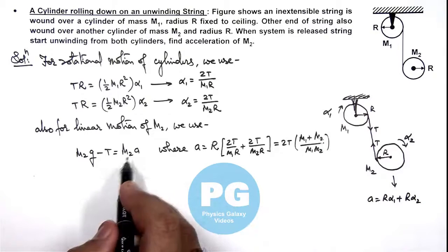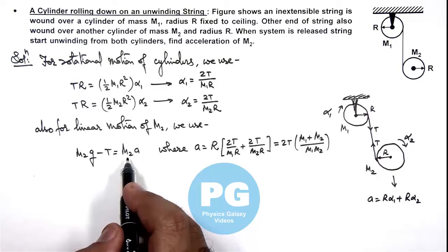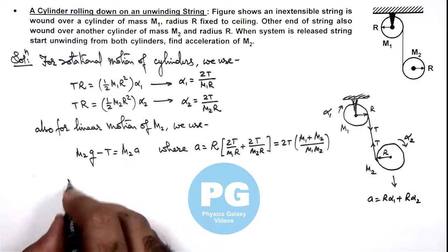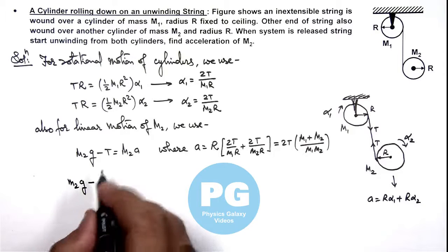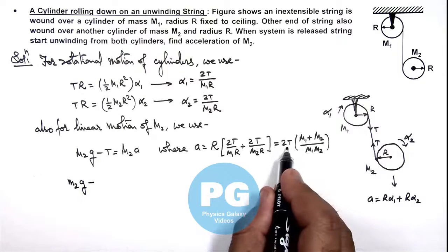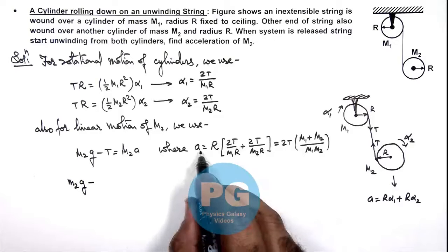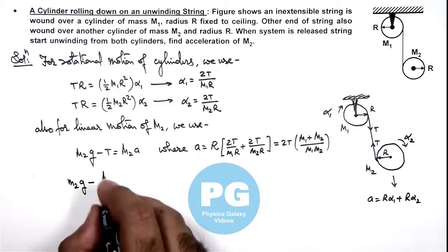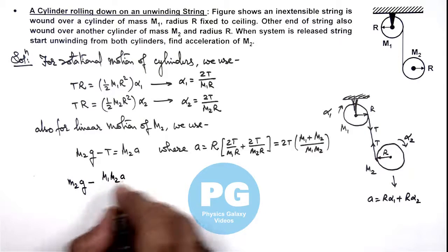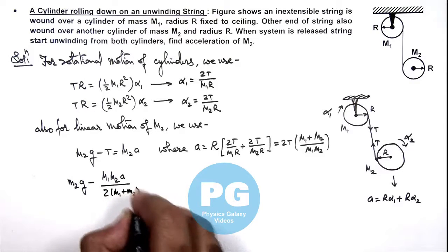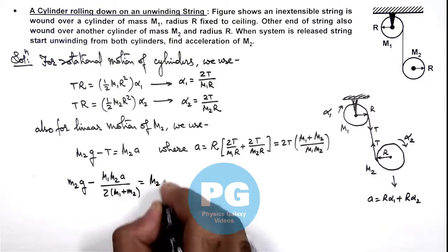If we substitute the value of acceleration, we'll be getting m2 g minus T, which we can substitute as m1 m2 a divided by twice of m1 plus m2, is equal to m2 a.